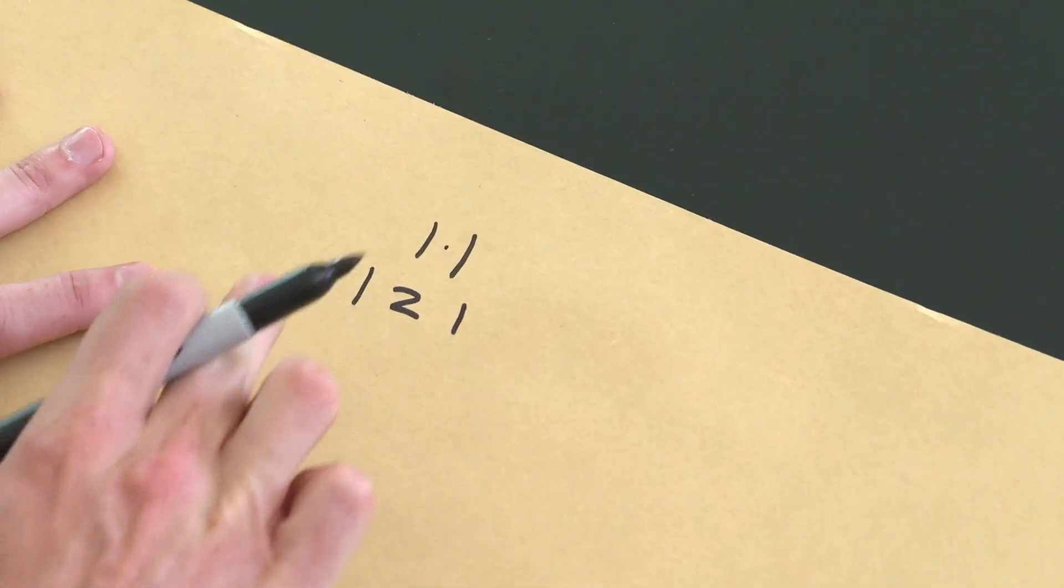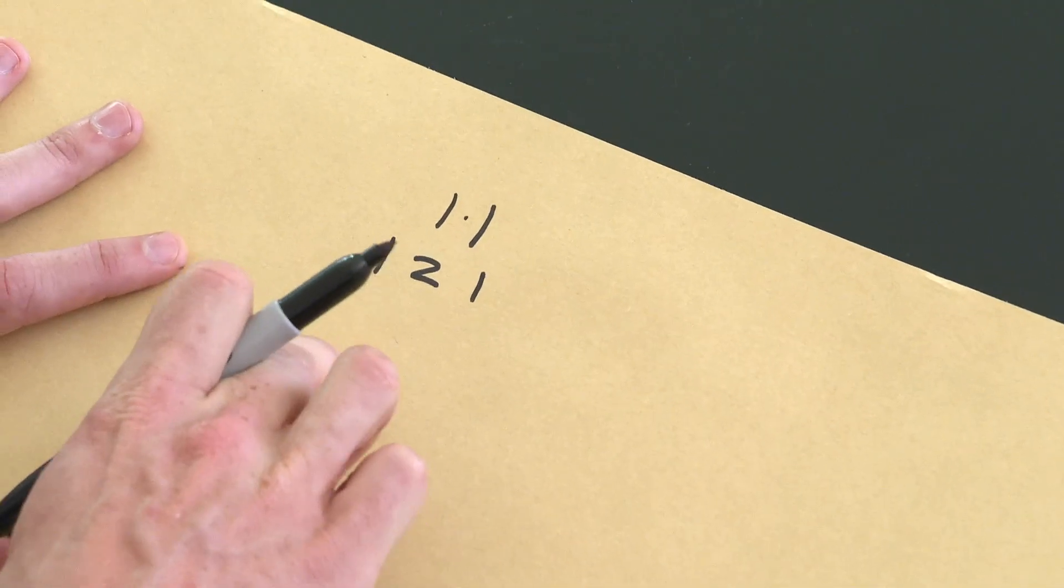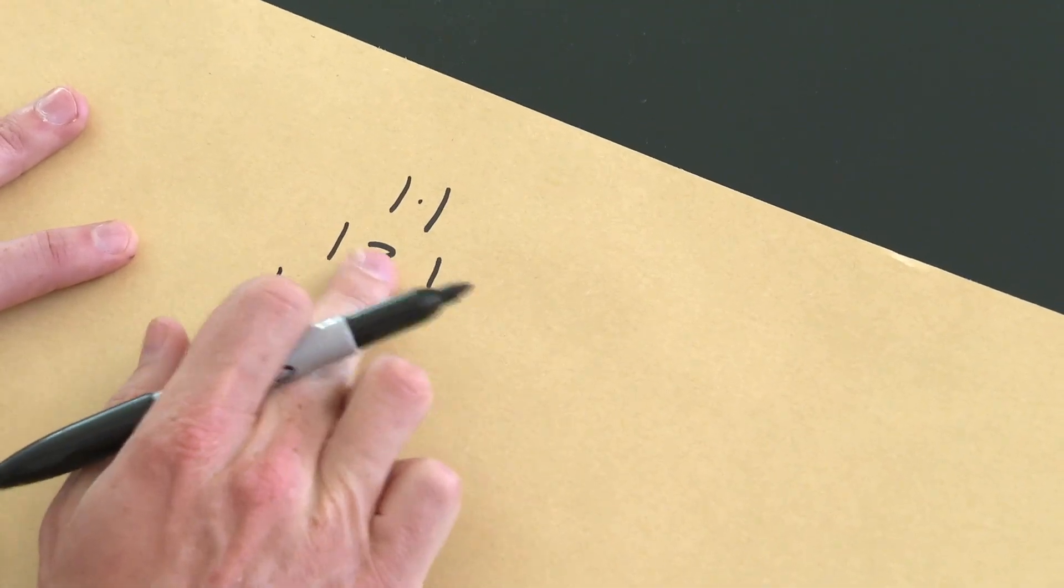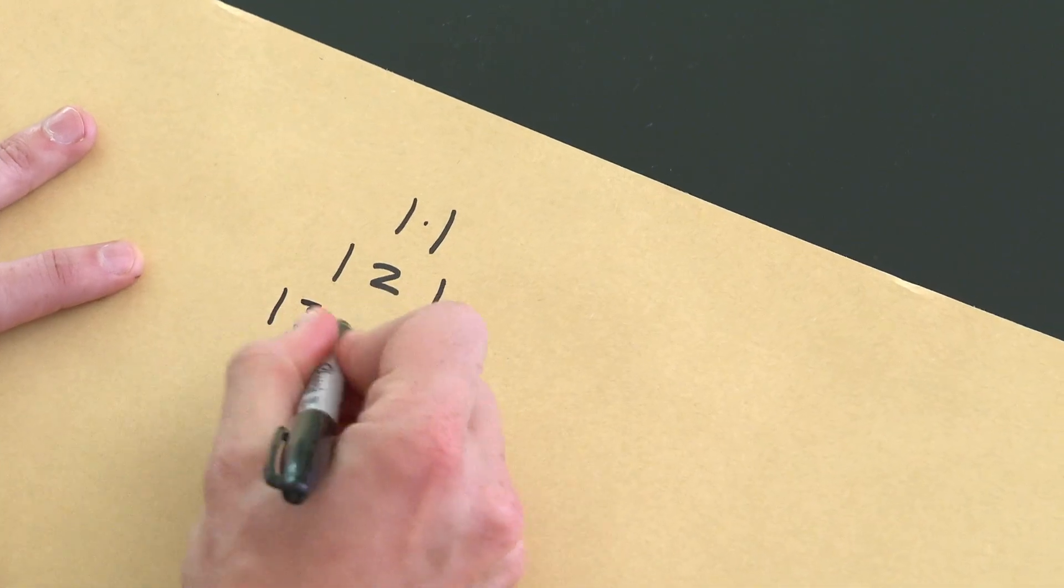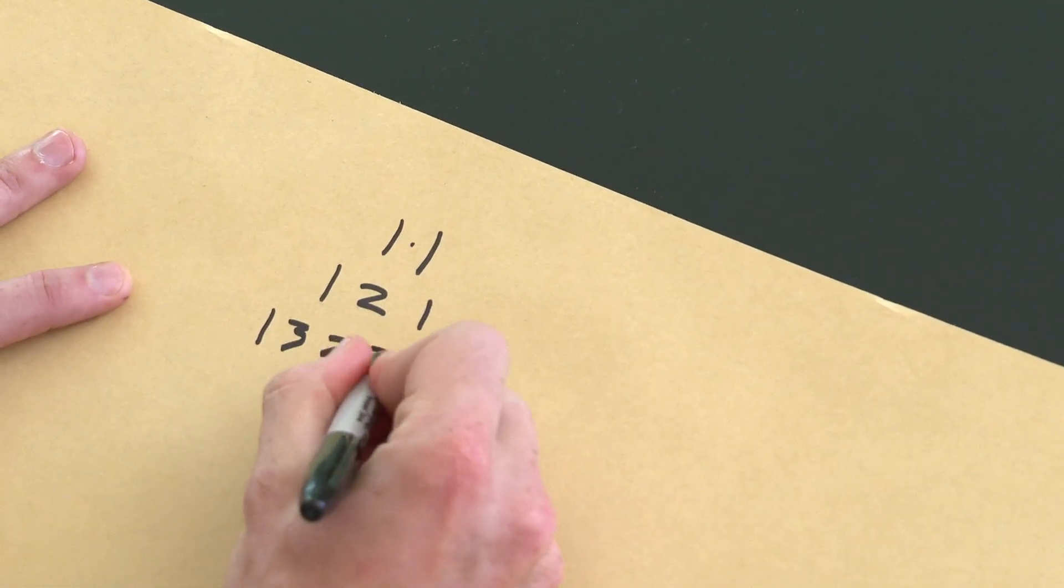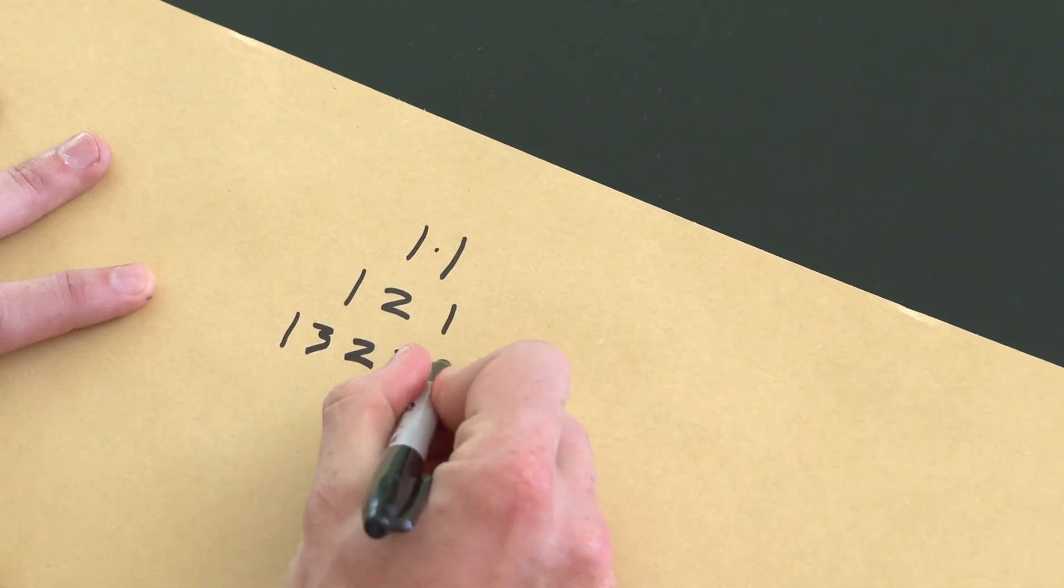And so for the third row, every time two numbers add up to 3 and they're next to each other, I'll insert that 3. So this will look like 1. Because 1 plus 2 is 3, I insert a 3 in there. I keep that 2. 2 plus 1 is 3. So I insert a 3 in there, and then I keep that 1.